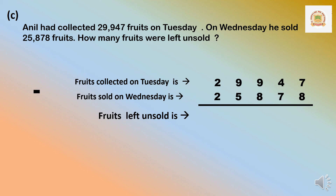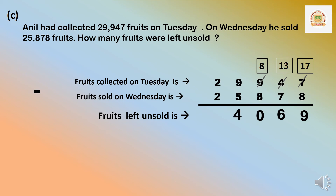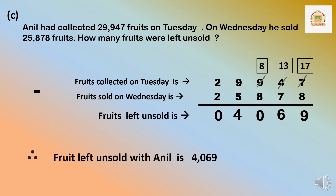In the 1's place, 7 minus 8 cannot be done. We borrow from the 10's place. From 40, we take 10, making it 17. 17 minus 8 is 9. As 40 gave the number, it becomes 3 (30). In 30, we cannot minus 70, so we borrow from the 100's place. 900 gives 100, making it 130. 130 minus 70 is 60, so 13 minus 7 is 6. The hundreds place: 8 minus 8 is 0. 9 minus 5 is 4. 2 minus 2 is 0. Therefore, fruits left unsold with Aneel is 4,069.